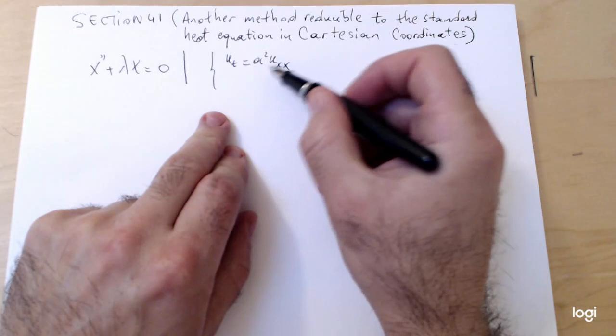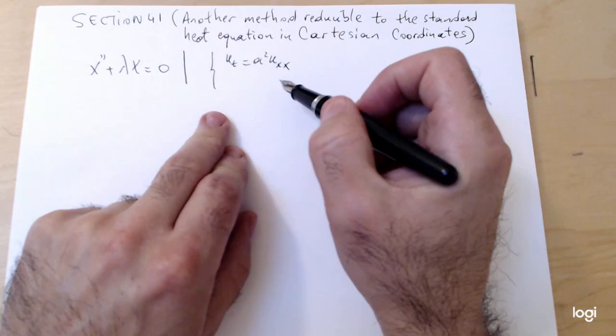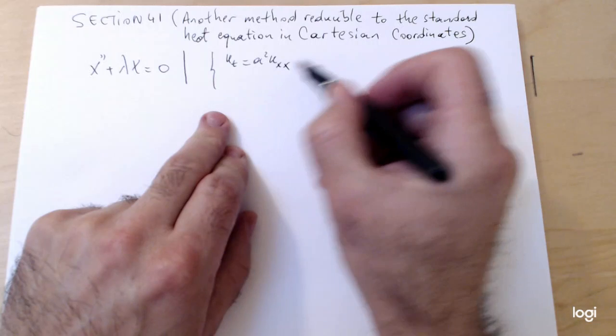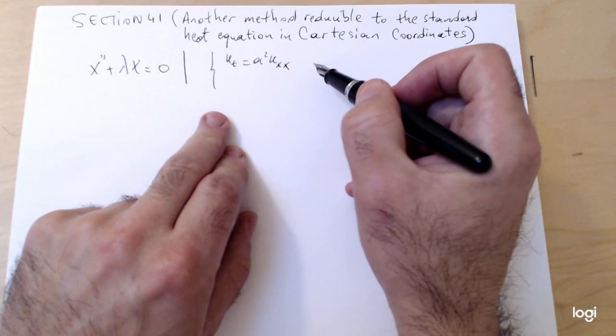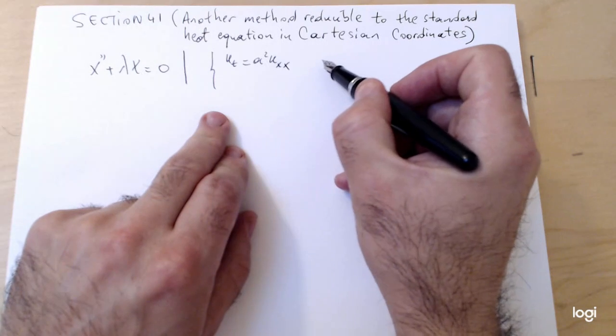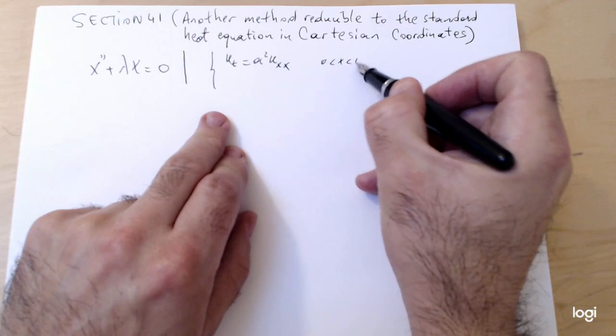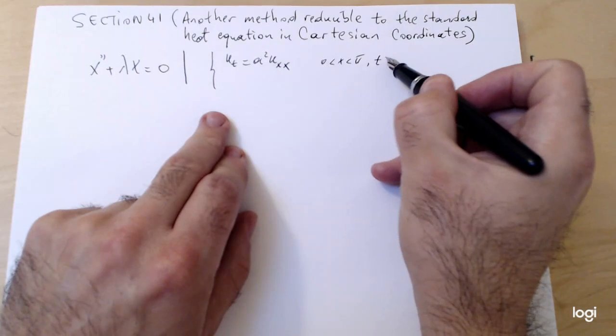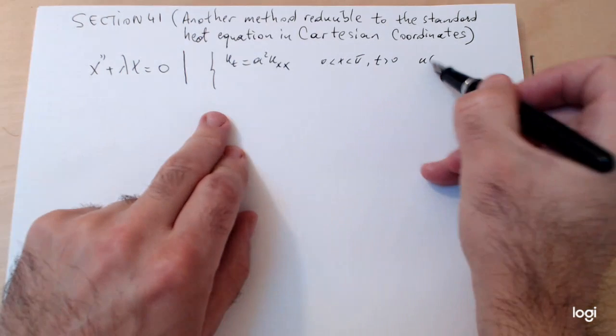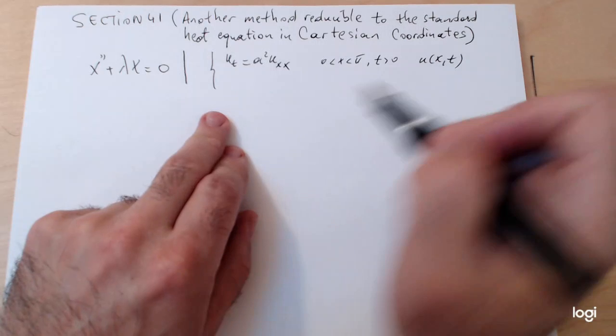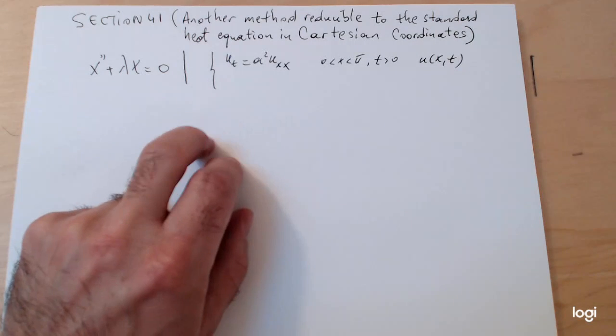Suppose that the heated bar whose temperature is described by this equation is of length pi, which is the easiest interval related to the Fourier series. That means x is between zero and pi, and the time is greater than zero.